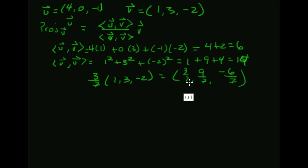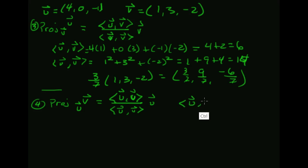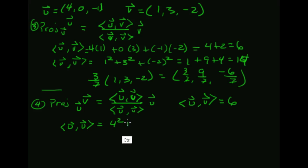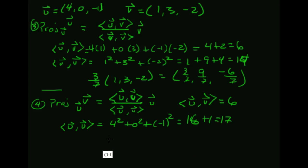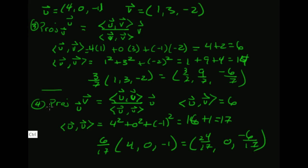That gives the projection result for problem 3: (3/7, 9/7, -6/7). For problem 4 we project v onto u. The numerator u·v is still 6. Now u·u is 4 squared plus 0 squared plus (-1) squared, which is 16 plus 1 equals 17. The coefficient is 6/17, times the vector (4, 0, -1), giving (24/17, 0, -6/17) as the projection for problem 4.